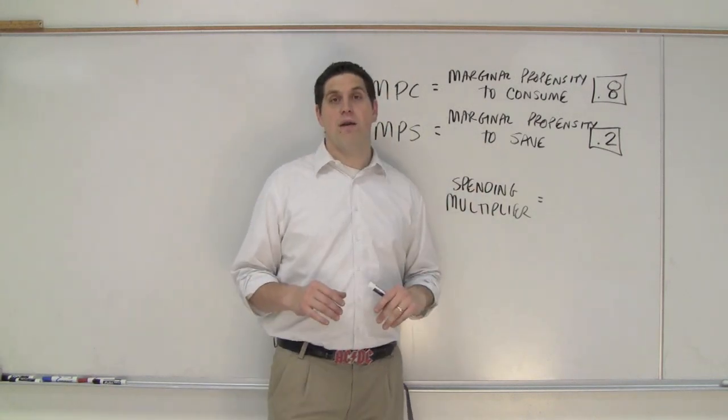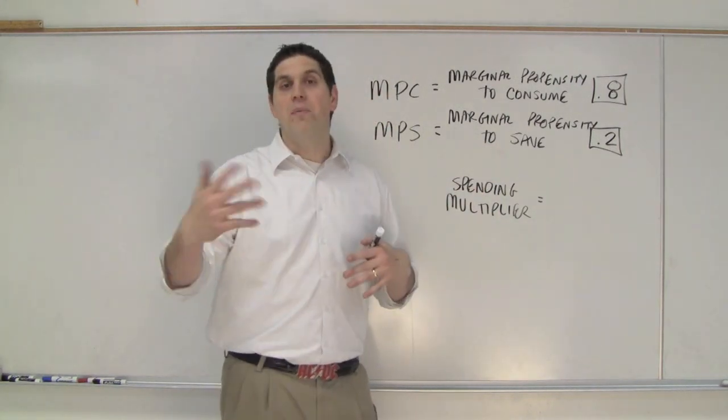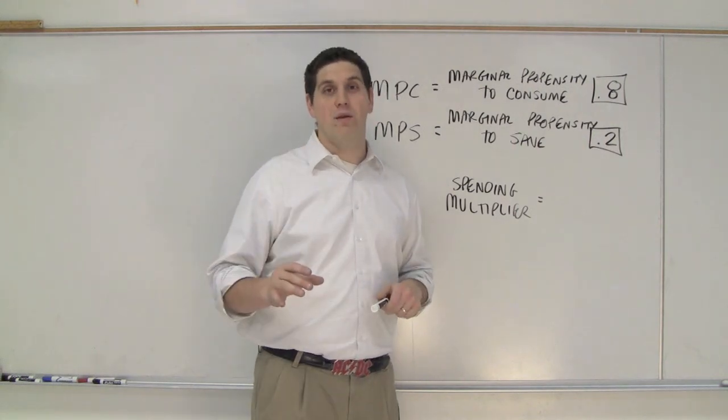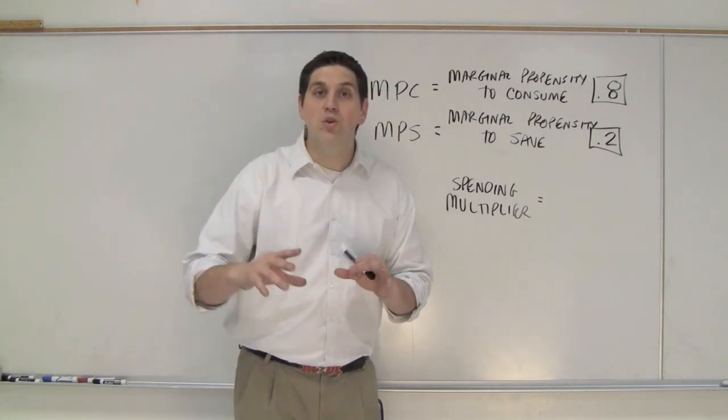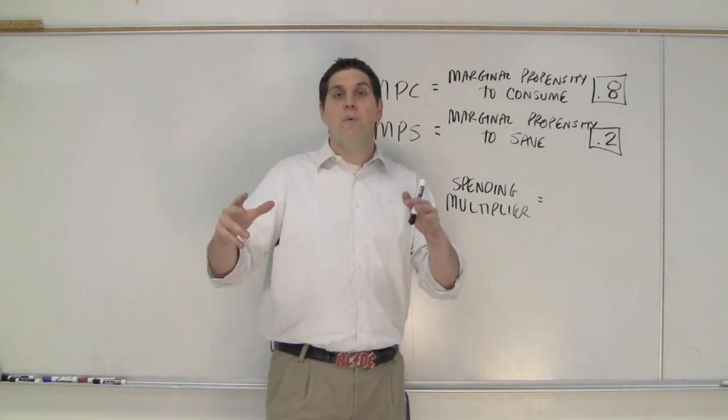you're ready for something called the spending multiplier. When the government or people or businesses spend money in the economy, that money actually gets multiplied. Let's say the government spends $100 million on a new school. That new school, that's $100 million and people get that money.